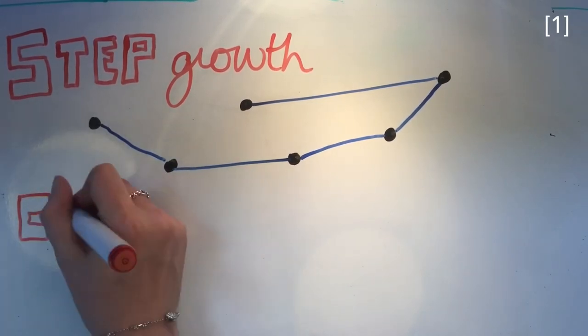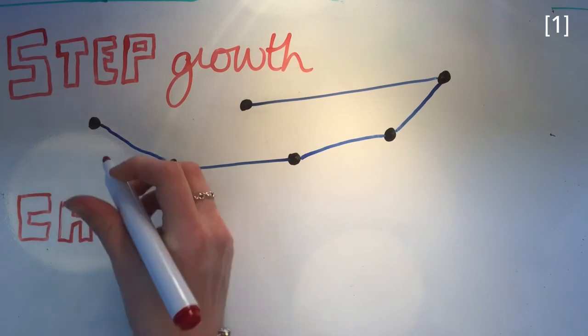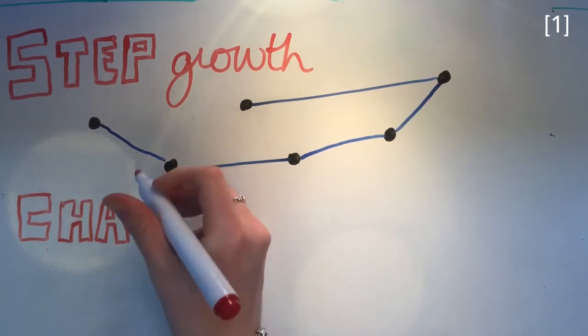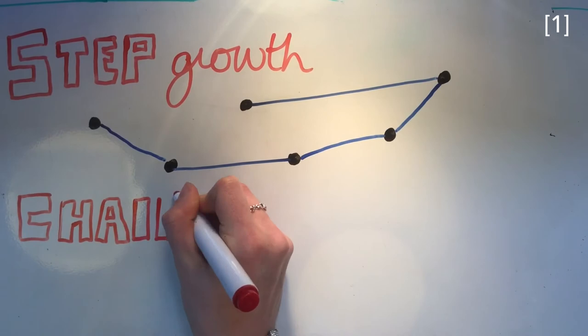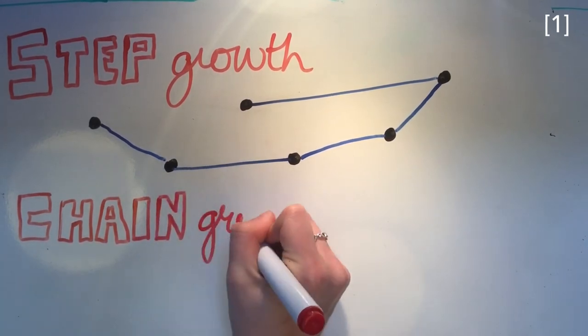Step growth polymerization is significantly faster than chain growth, where there is only one receptive end, with the monomers added one by one.